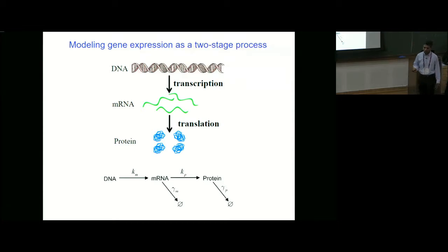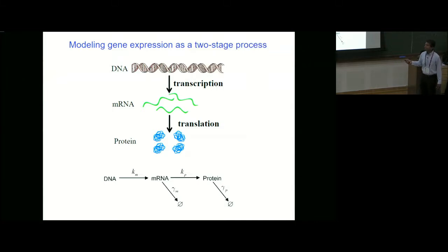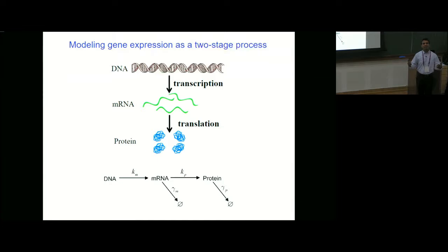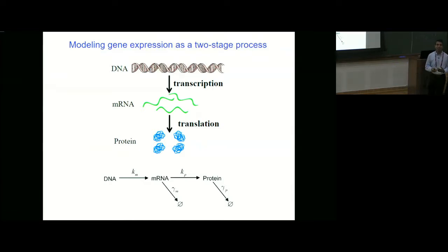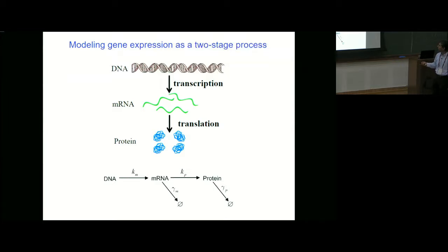What is remarkable is that even this simple model actually captures many of the features now observed by experiments at a single cell level, so it is often used for fitting data. Although this model is very simple, you can obtain the moments of mRNA and protein distributions very easily. However, for a long time the steady-state distribution of proteins had no analytical expressions — at least for the corresponding generating function. So even though this model is very simple, it was hard to find the exact expressions we would like to have.